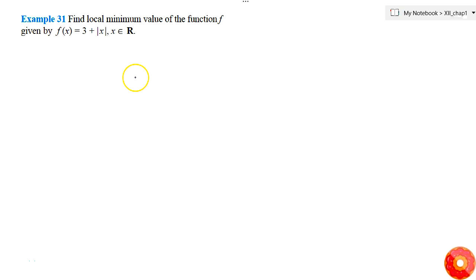In this question, we are asked to find the local minimum value of the function f(x) = 3 + |x|, which equals 3 - x if x < 0.